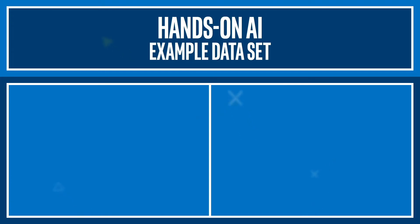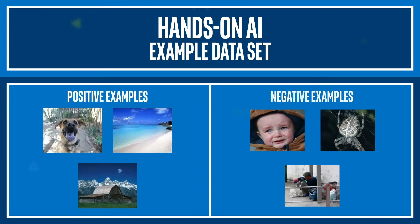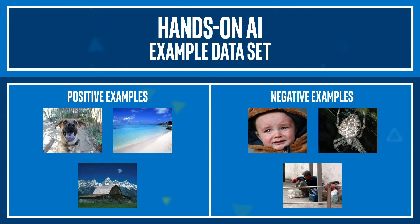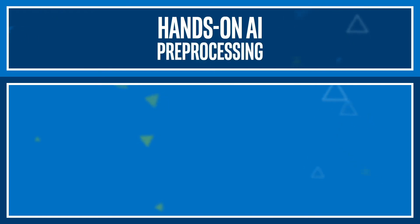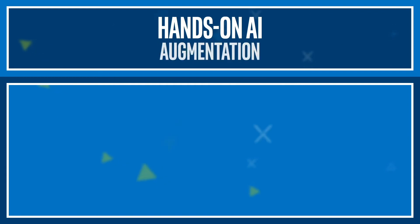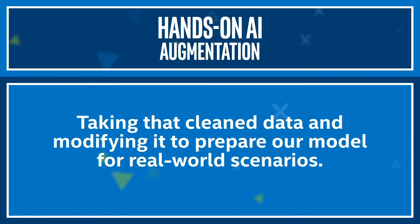For this, we have picked a data set with positive and negative examples. There are a lot of them out there, so the specific data set isn't incredibly important. We then show you how to do image data preprocessing and augmentation. Pre-processing is a series of steps that prepares our data set for ingestion into a machine learning algorithm. Augmentation is then taking that clean data and modifying it to prepare our model for real-world scenarios.